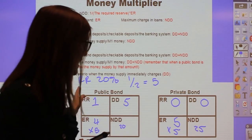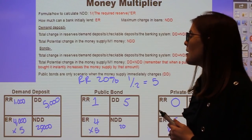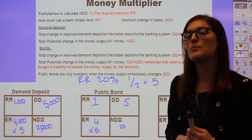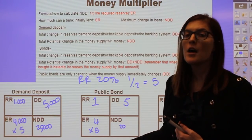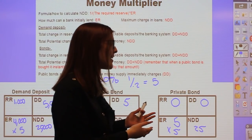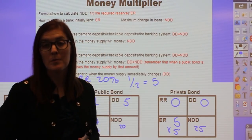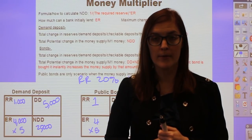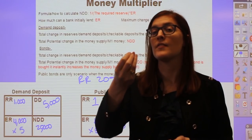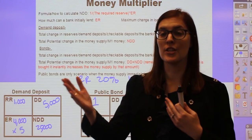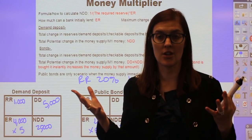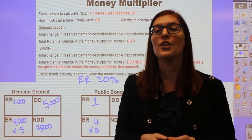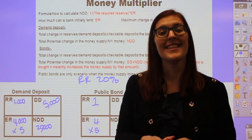One key difference for the private bond is the maximum change in loans. Maximum change in loans is always just NDD — loans going from bank to bank. For the demand deposit and public bond, the maximum change in loans was $20 million. But in the private bond, the entire $25 million went through loans, so the maximum change in loans is the full $25 million. These are the three types of money multiplier problems on the AP exam. Follow these rules for demand deposits, public bonds, and private bonds, and you will get the correct answer.